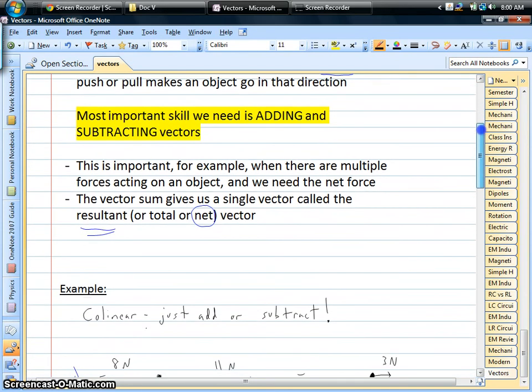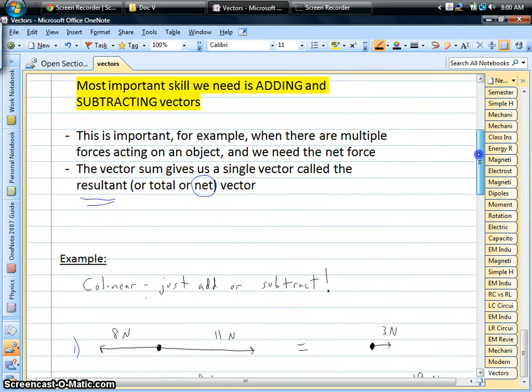So why would we want to add vectors? Well, in real life, even if you're just sitting there watching this right now, there's multiple forces acting on you. Multiple vectors. Gravity's pointing down, your seat or the floor is pushing up on you, the wind might be hitting you, whatever. So you have multiple forces.